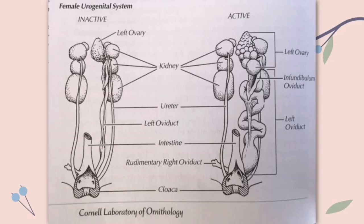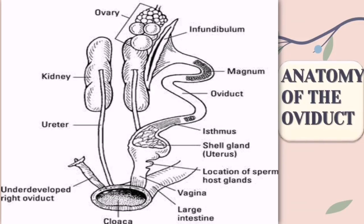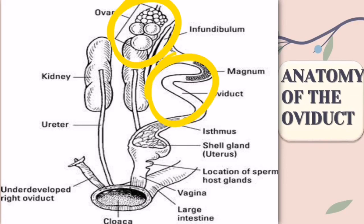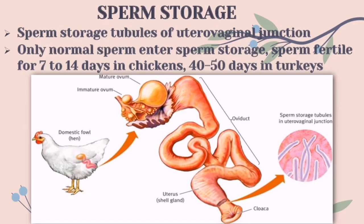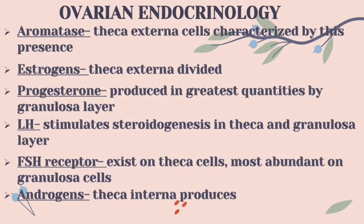The figure shown here is the female urogenital system with its distinct parts labeled. This one shows the anatomy of the oviduct. Most female birds, including the domestic species, only the left ovary and the left oviduct would develop. A part of the anatomy of avian females also includes the sperm storage, which is located in the utero-vaginal junction.